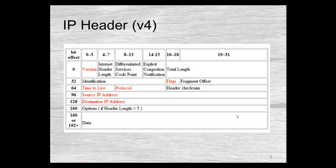Looking at the header, it begins with a version, a header length, and a number of different fields. Some we find much more critical than others, including version, time to live — which we'll get into in much more detail — and the addresses.